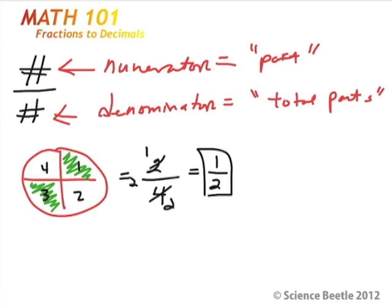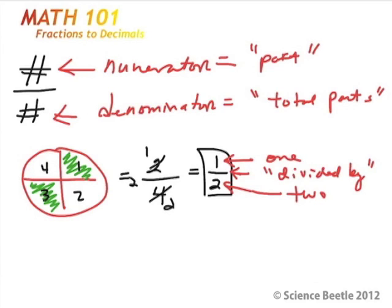Looking at the way the fraction is written, the top number is the part and the bottom number is the total. But there is another way to read this: the line in the middle represents the word 'divided by.' So we can read one-half as one divided by two. Can we represent one divided by two as a decimal?